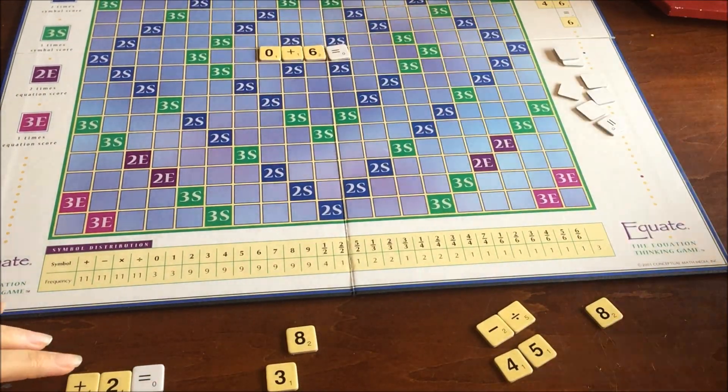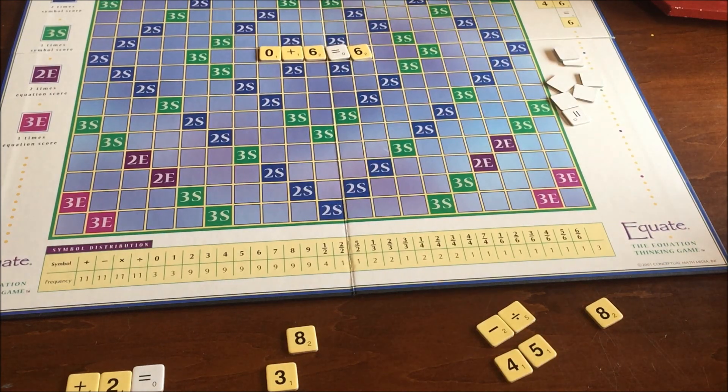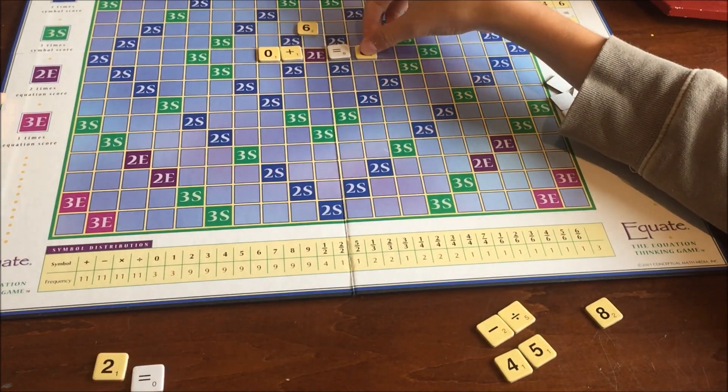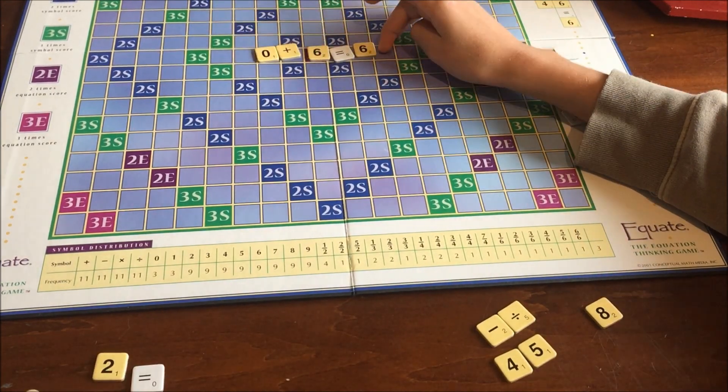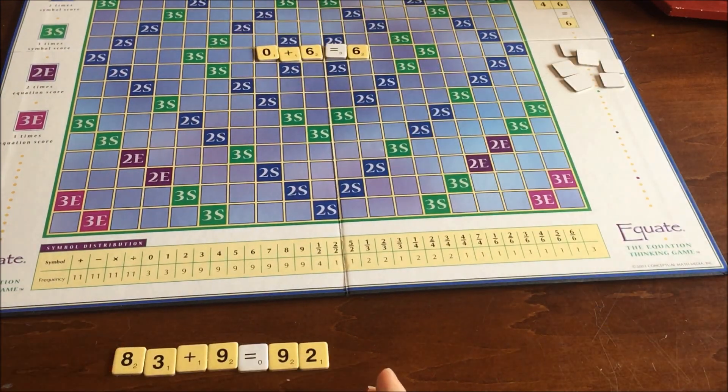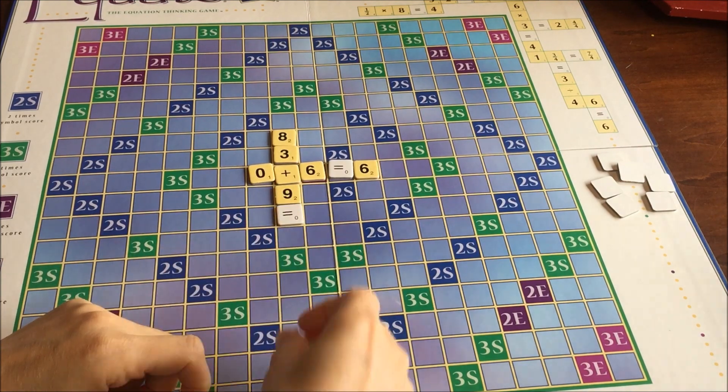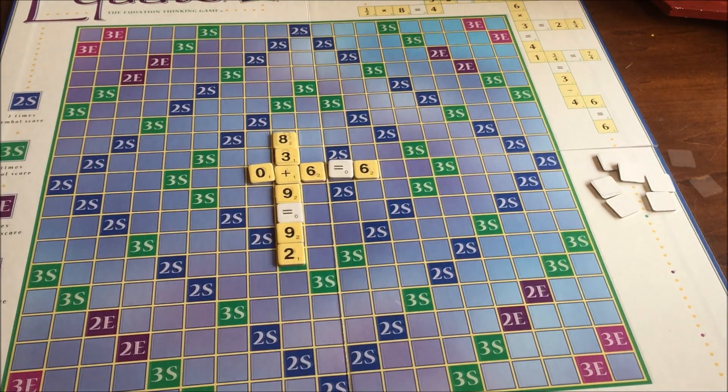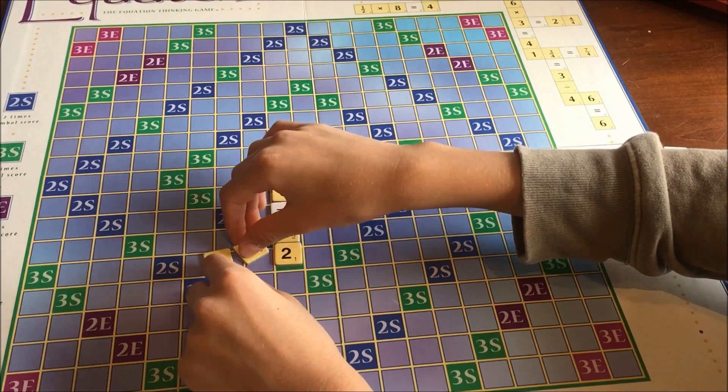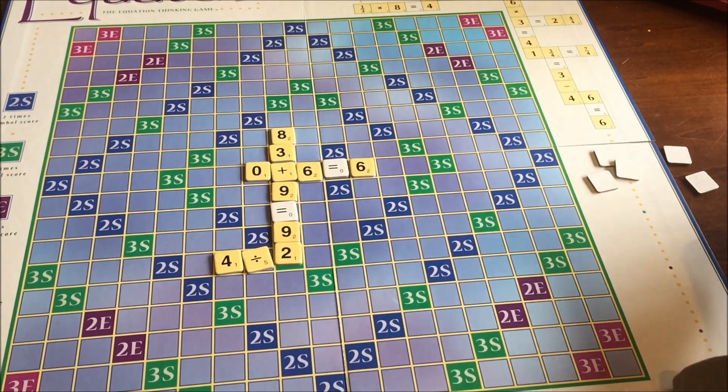There's a little icon on the board for I think it says 2e so that means double the whole equation score, which is a nice thing when you're first playing. When you're the second or third player you have more options, so if you don't have a number or an operation sign it might already be on the board.